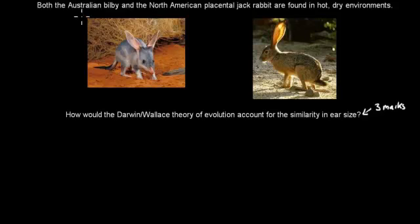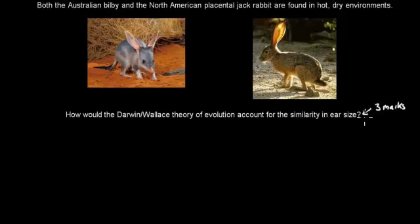The question says: both the Australian Bilby and the North American Placental Jackrabbit are found in hot, dry environments. How would Darwin's and Wallace's theory of evolution account for similarities in their ear sizes? That's for three marks. This is the Bilby here, and this is the Jackrabbit. Pause the video and attempt the question.